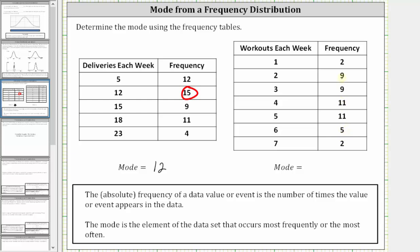To find the mode, we first identify the greatest frequency, which in this case is 11, which occurs twice, and therefore we are going to have two modes. Notice the data value of four has a frequency of 11, and so does the data value of five. And therefore in this case, we have two modes, four and five.